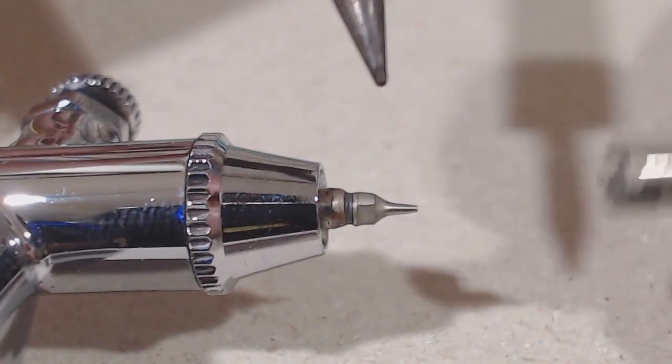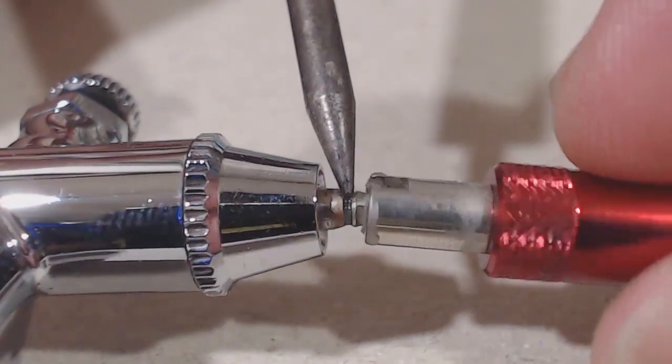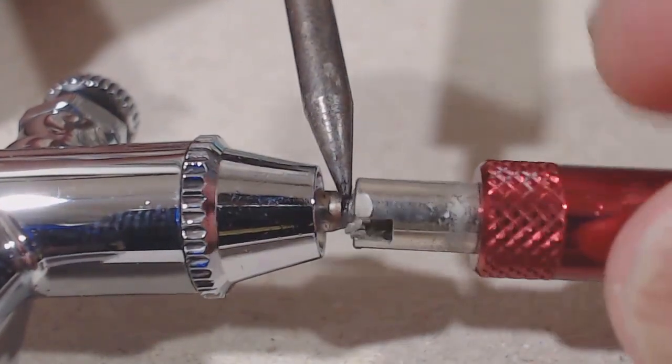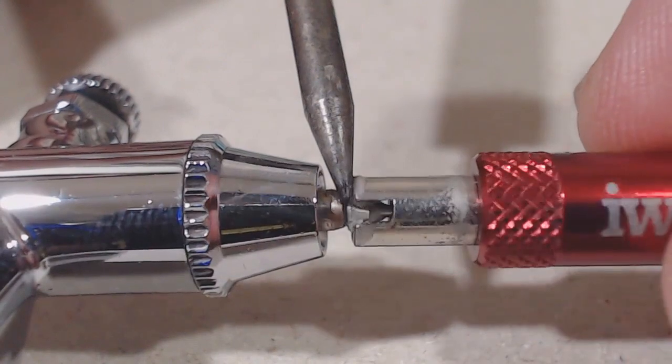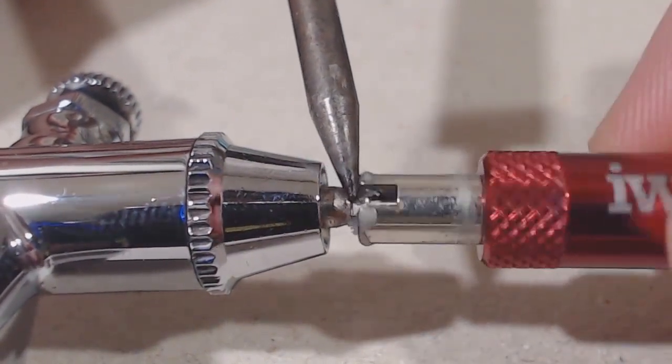After that, hold the soldering iron on the other hand and screw back the nozzle while the soldering iron is still keeping the wax melted. Don't worry, the 30 watt soldering iron cannot damage your airbrush.